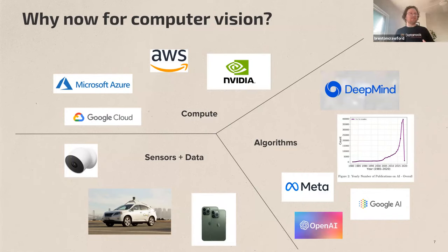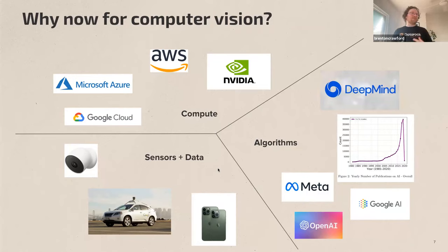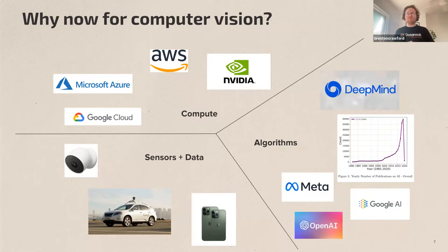One diagram worth noting shows the number of AI publications from 1980 to 2020 — they're going more or less vertical around 2020. The algorithms are getting remarkable. The third factor is sensors and data: there are now a lot more ways to sense drill core than in the past, giving us lots of different variables. Deep learning models thrive on large volumes of varied data. So we've got compute, algorithms, and sensors all growing really quickly at the same time, making this a very impactful moment for these technologies.